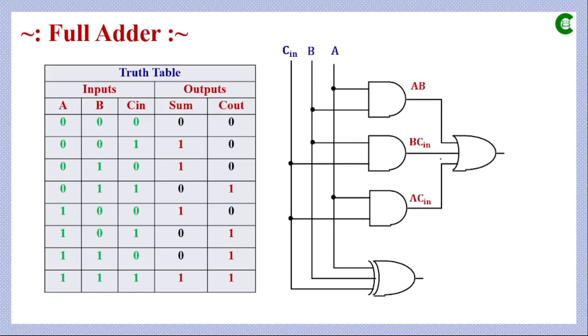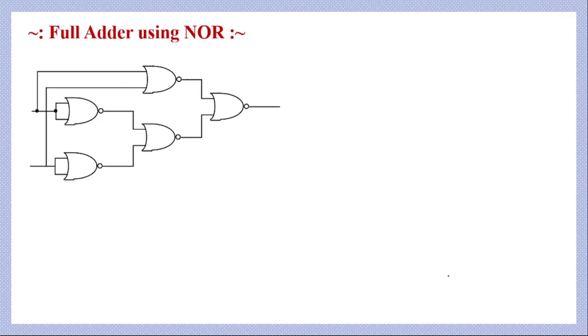In the logical circuit, a three-input XOR gate gives the sum of the full adder, while AND gates produce the carry. Now, to implement the full adder using NOR gates only, in the first stage we use five NOR gates with inputs A and B.